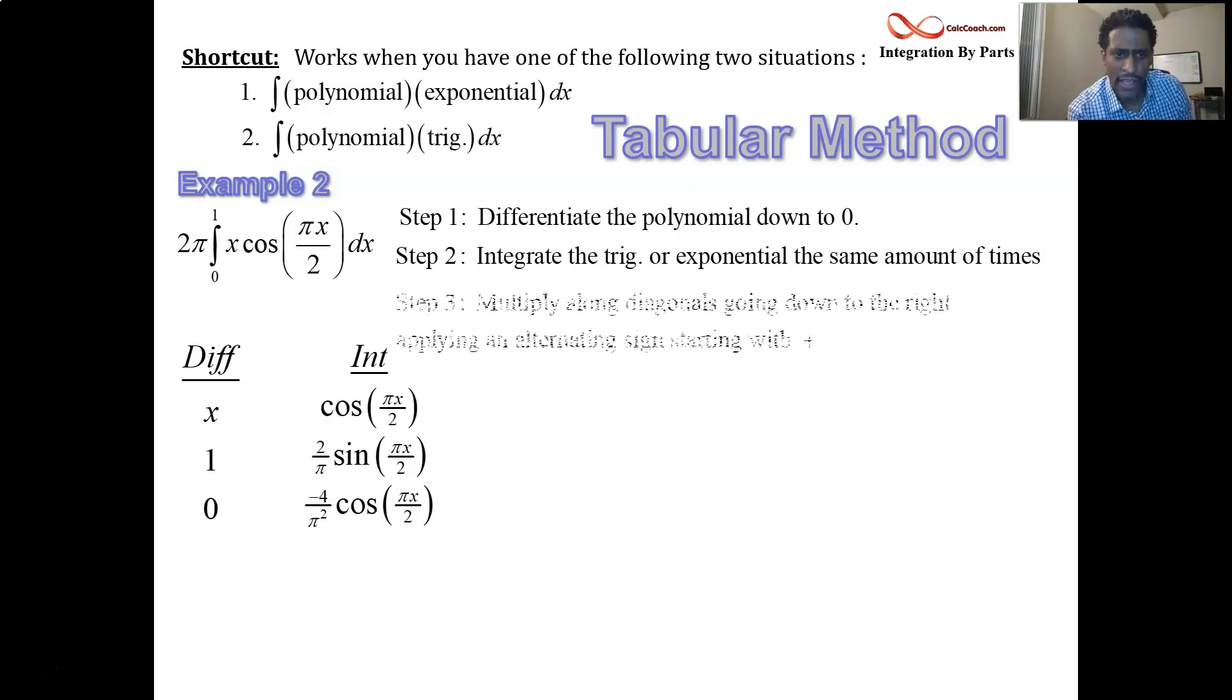Now we're on to step three. Step three is where we're going to multiply along diagonals that are going downward and to the right. And as we do that, we apply an alternating sign starting with a plus. So x is going to be multiplied by 2 over π sine π x over 2. 1 is going to be multiplied by negative 4 over π squared cosine π x over 2. But to that product, we apply this alternating sign. If there were more terms, we have to continue alternating. What this does for you is it hides behind the scenes all of the integration by parts formula. The first product there, uv, is going to be uv. And the second product there is going to be minus the integral of v du. Everything is done for you. Putting those two terms together, we'll have 2x over π sine of π x over 2, 4 over π squared because the double negative makes it plus, cosine of π x over 2. The 2π is outside. And we have 0 and 1 as our bounds.